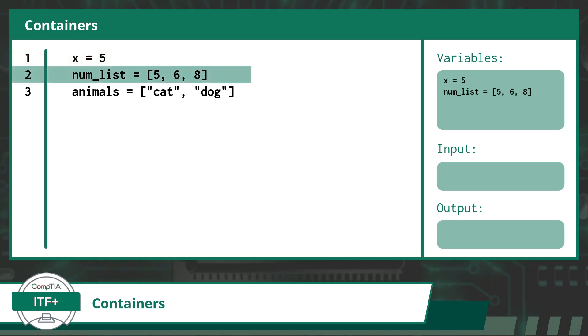Now, in line 2, we have a container. Here the identifier is numList. This is still considered an assignment statement, as it assigns a container with a set of values, in this case the integers 5, 6, and 8.